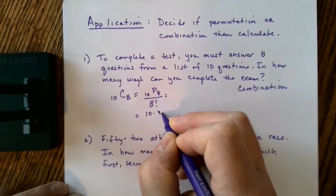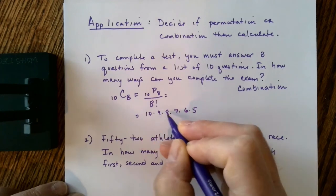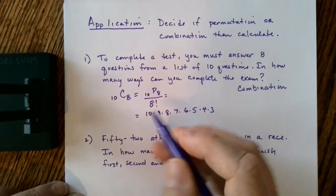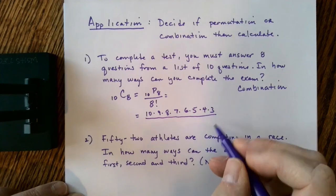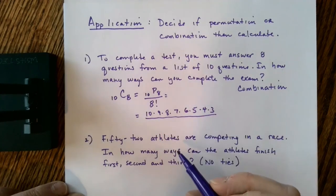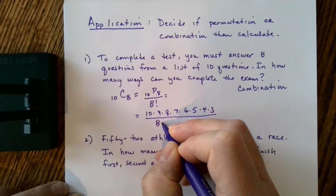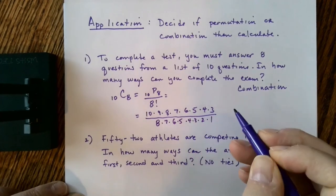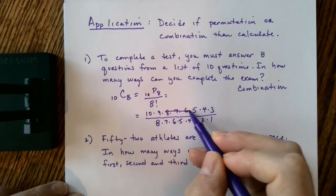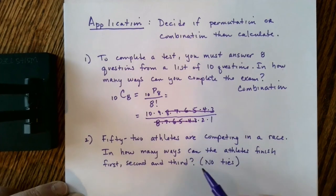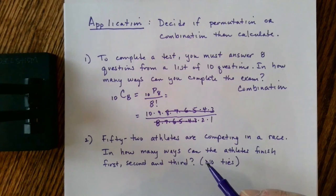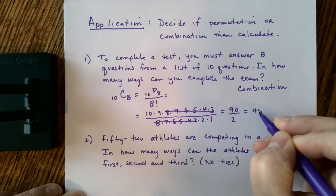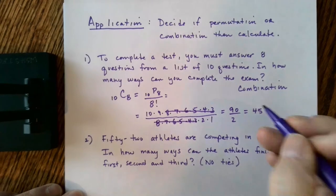For 10C8, treat it as the permutation of 10 taken 8 at a time, divided by 8 factorial. Counting down from 10: 10, 9, 8, 7, 6, 5, 4, 3 — that's 8 terms. Divided by 8 factorial (8 × 7 × 6 × 5 × 4 × 3 × 2 × 1). The 8 through 3 terms cancel in numerator and denominator, leaving 10 × 9 divided by 2, which is 90 ÷ 2 = 45. There are 45 possible ways a student can answer 8 questions from 10.